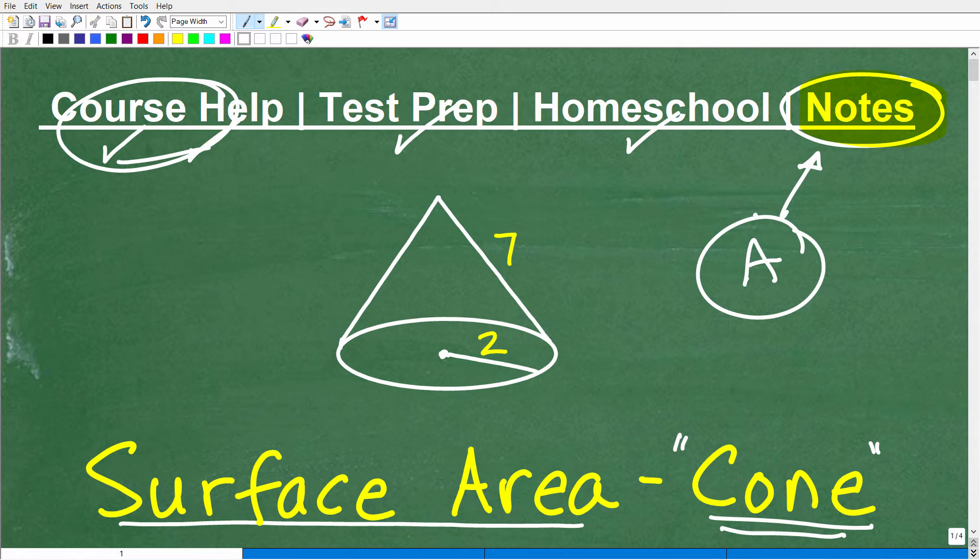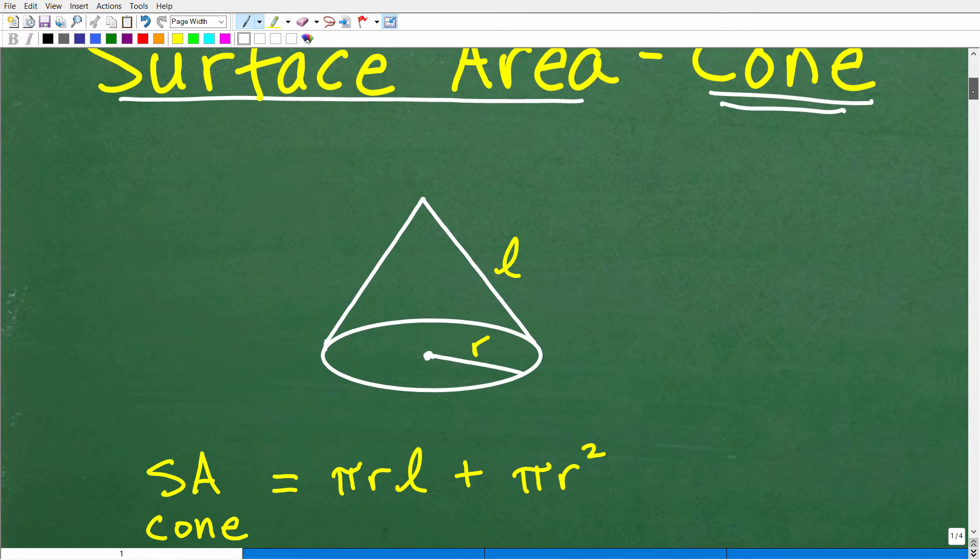So let's get into the surface area of a cone, and then we'll go ahead and compare answers if you actually did this problem. Now, this particular problem, we don't have any units of measure. For example, this could be 2 inches, and this could be 7 inches. We should have probably put that in, but sometimes you are given problems where there is no units of measure, and I'll address that here in a second. Let's go ahead and get to the formula.